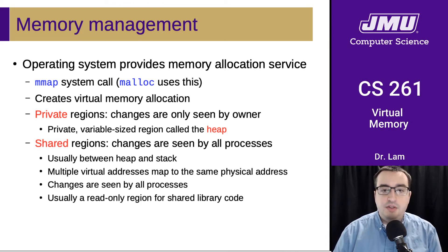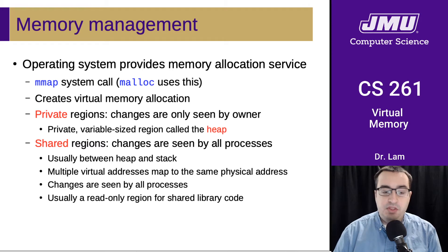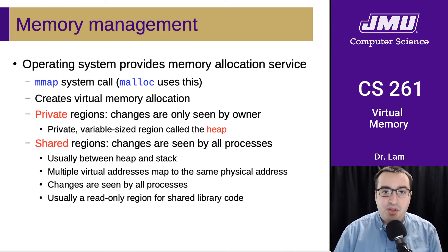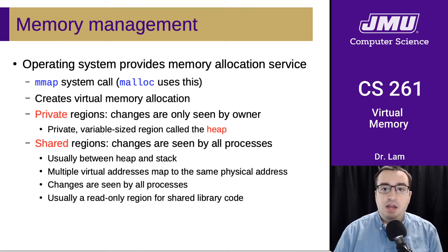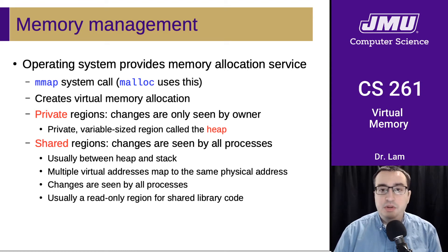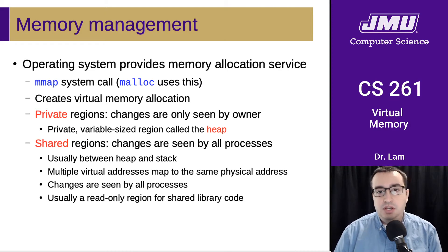There are also some shared regions where changes are seen by all processes, and this is usually in the address space between the heap and the stack. Multiple virtual addresses map to the same physical address here. So you may have one copy of a library, and all the processes are using that same copy. If there are changes to it, those changes will be seen by all processes. Usually this is only done for read-only memory, like shared libraries.